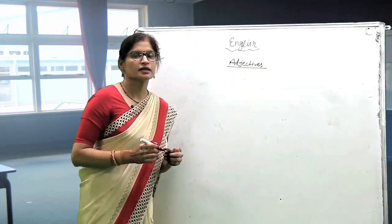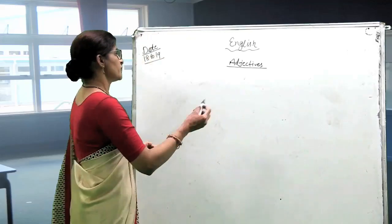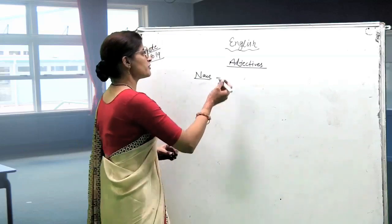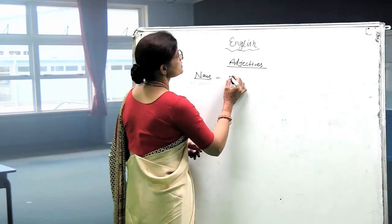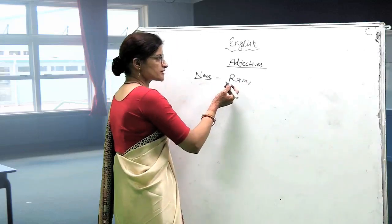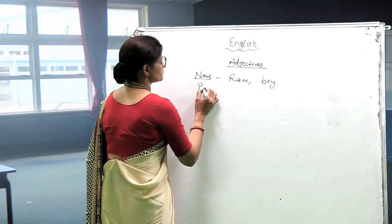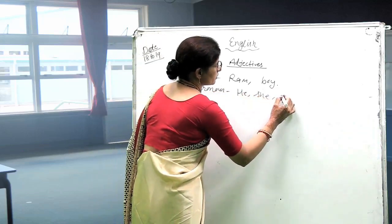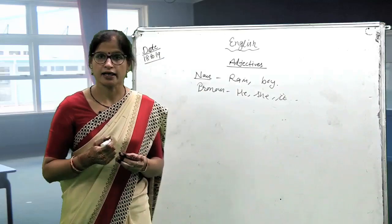What are adjectives? Adjectives are the words that describe nouns and pronouns. What are nouns? Nouns are naming words. Noun can be common, noun can be proper. For example, Ram is a proper noun and Boy is a common noun. Pronouns are words like he, she, it. So Ram and Boy here are nouns.